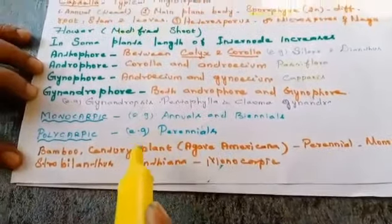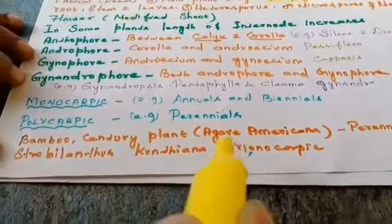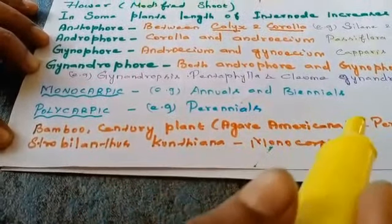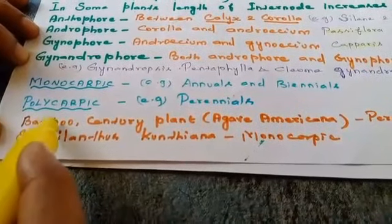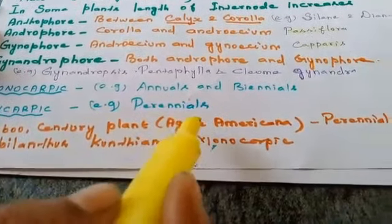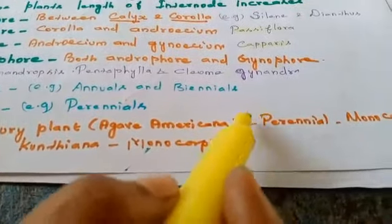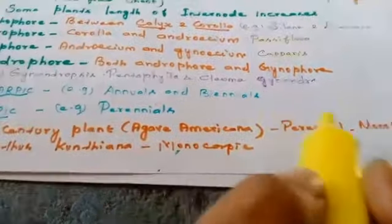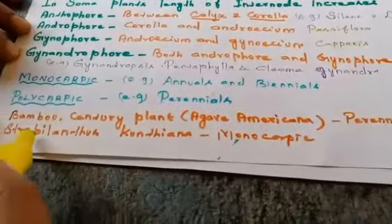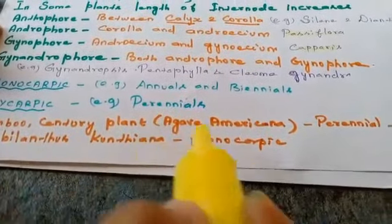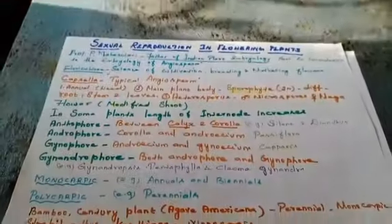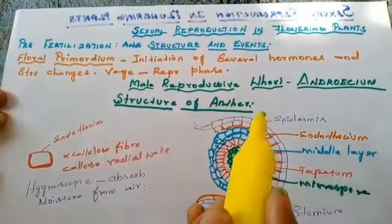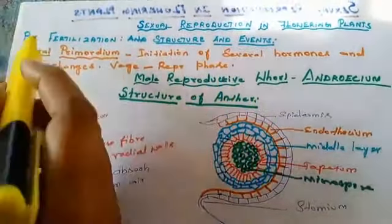Even though some plants are perennials, they produce flowers and fruit only once. Example: bamboo and the century plant (Agave americana). Even though they are perennial, they are said to be monocarpic. Questions may be asked about this. Bamboo is monocarpic. Strobilanthes kunthiana and Neelakurinji are also monocarpic.